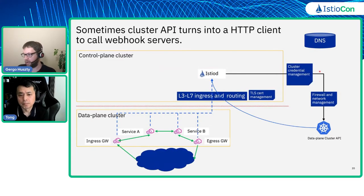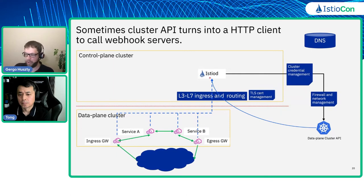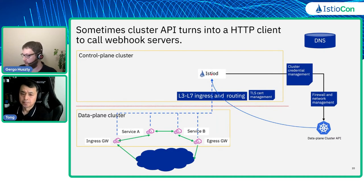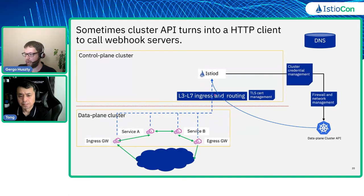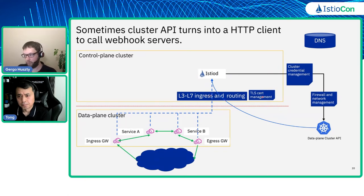This explains another arrow pointing from the data plane cluster API back to Istiod — a completely different service than where Envoy connects. Envoy connects to the discovery interface of Istiod, while the data plane cluster API connects to the webhook service. That means you have to expose multiple services and take care of how you do it — for example, on different TCP ports, or using SNI headers with multiple hostnames — and you always have to take care of certificate management.